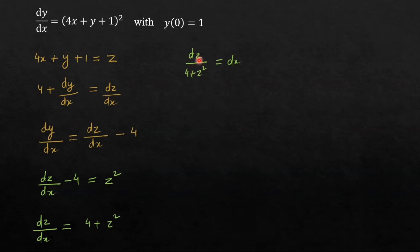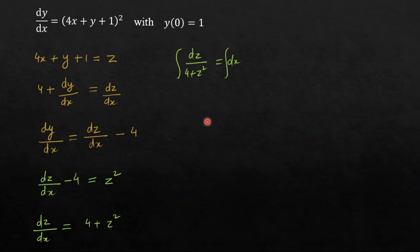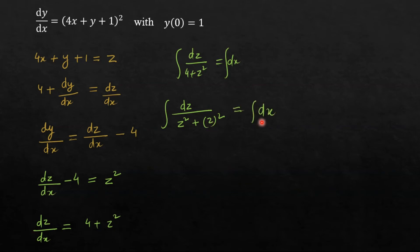On the left-hand side we have z variable, and on the right-hand side we have x variable. Now this equation is in the variable separation form. Now to get the solution, integrate both sides.